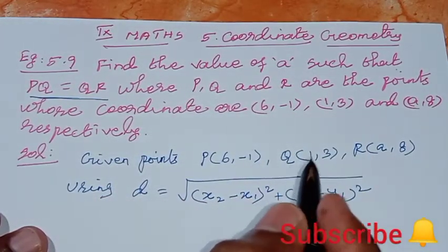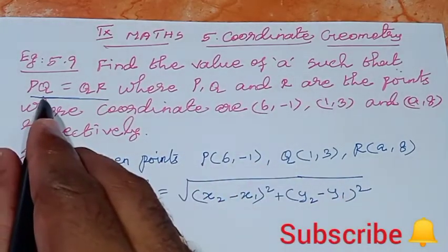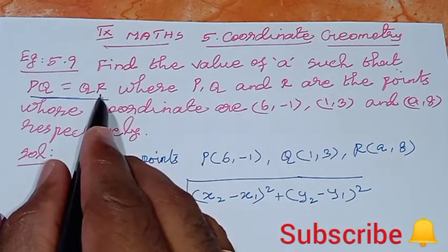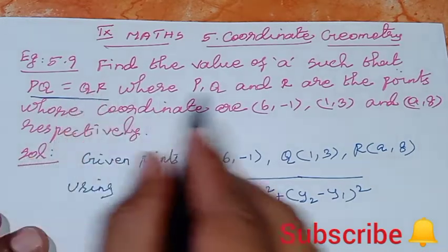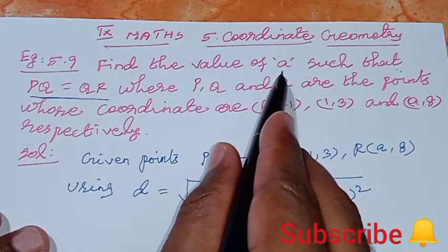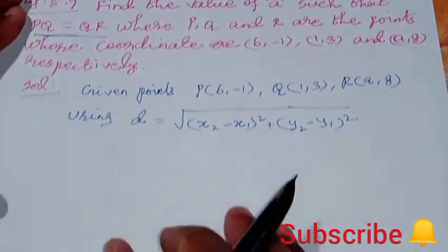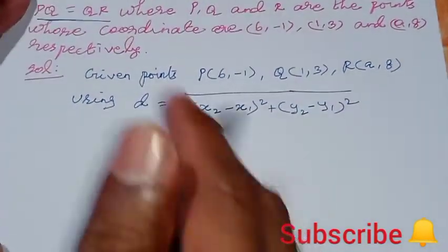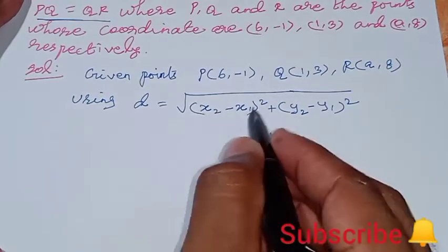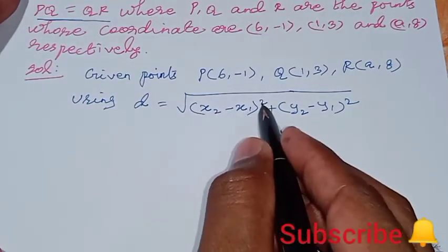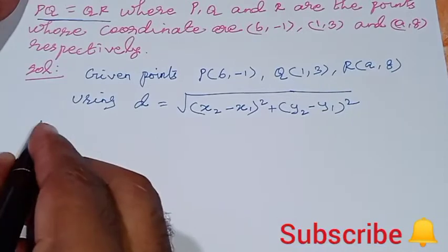Now, we will find the distance between PQ and QR. What is the formula? We use the distance formula: square root of (x2 minus x1) whole square plus (y2 minus y1) whole square.